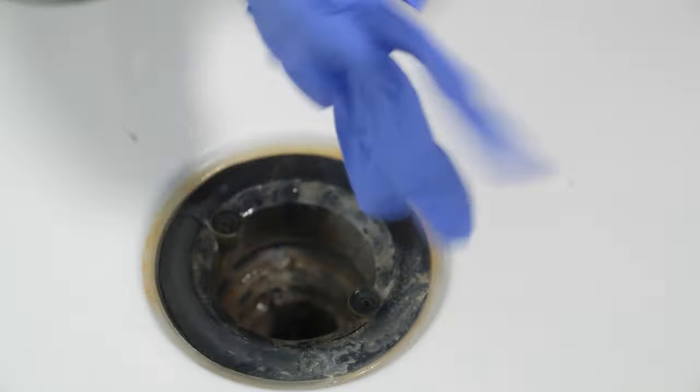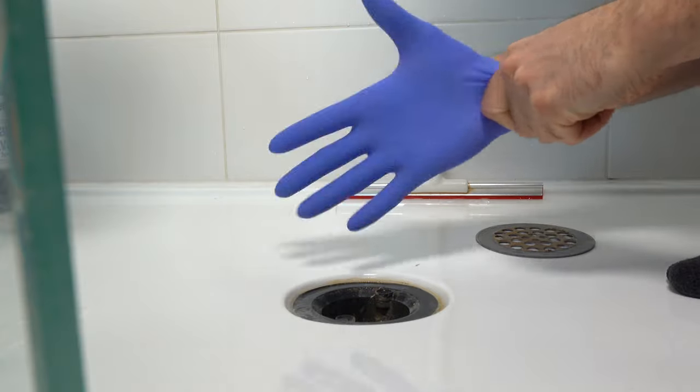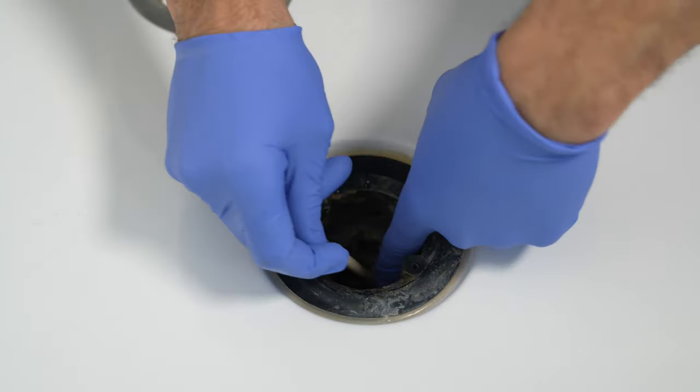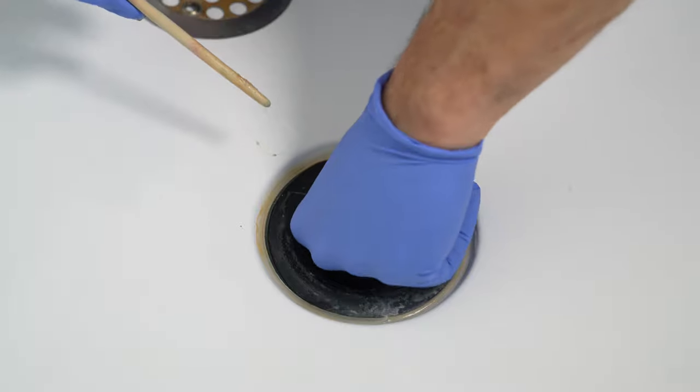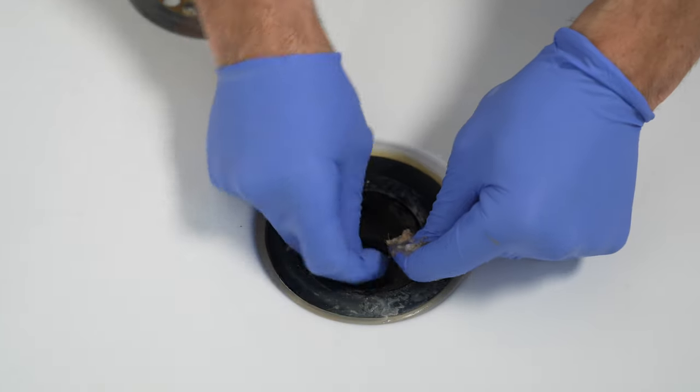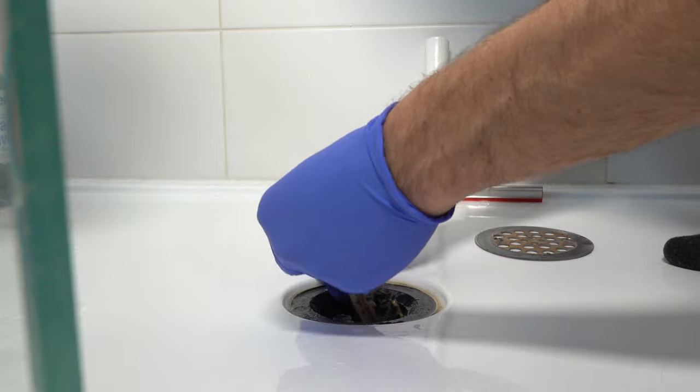Put on your rubber gloves as it's about to get messy. Try using your hands along with a pencil or a chopstick to remove as much hair as you can. Try making circular motions to gather the hair and remove it from the drain.